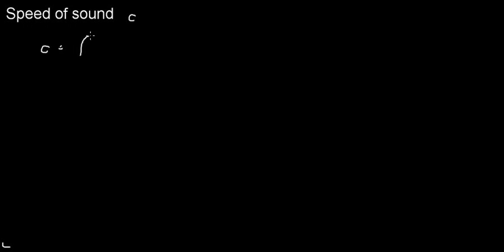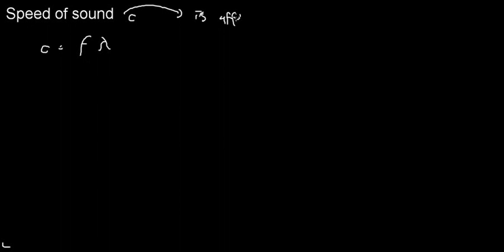The speed of sound is denoted by lowercase c, not to be confused with the speed of light — those are two somewhat different speeds. We already learned that the speed of sound can be resolved as a function of frequency and wavelength. What we need to know is that the medium affects the speed of sound.